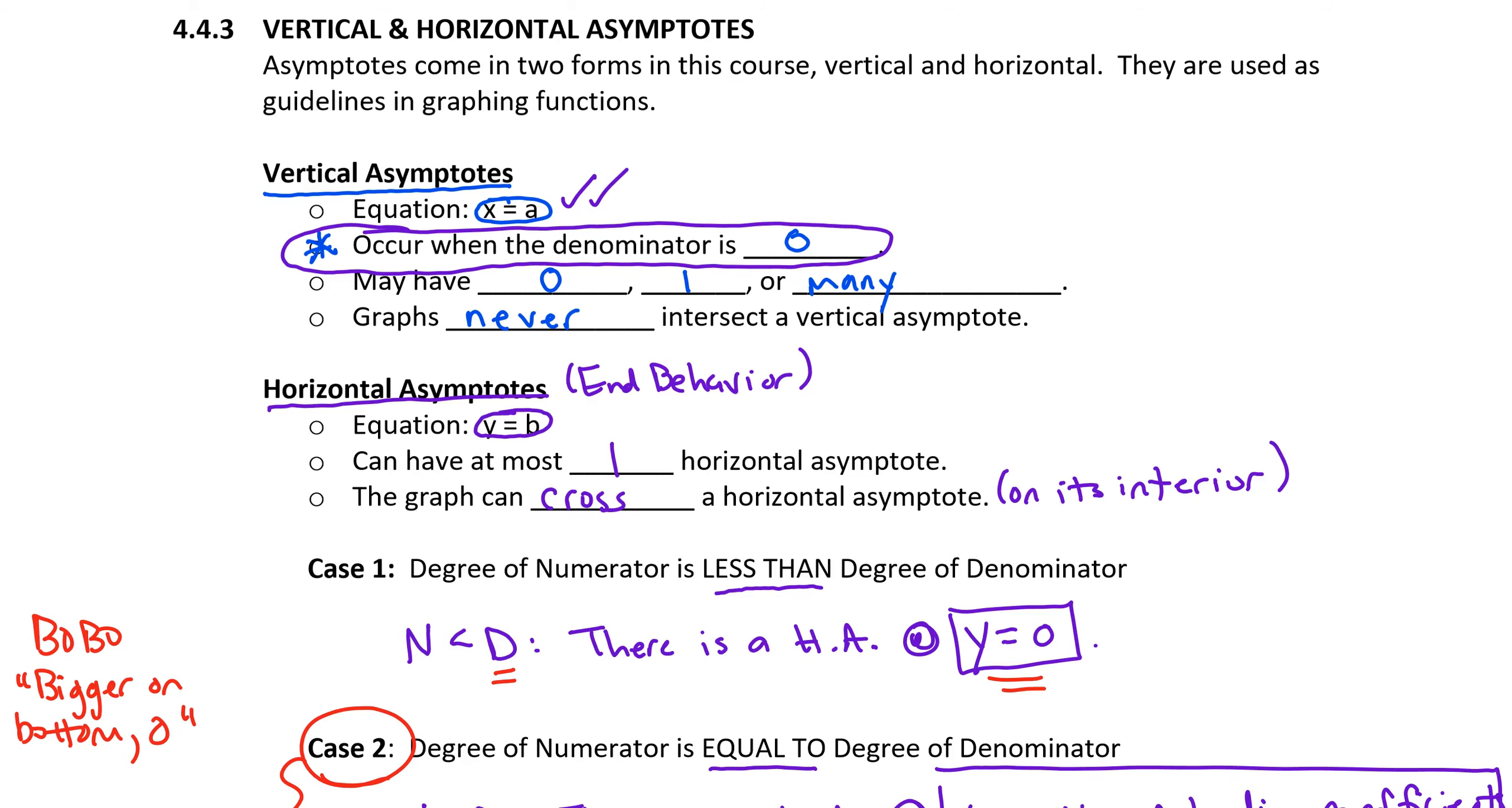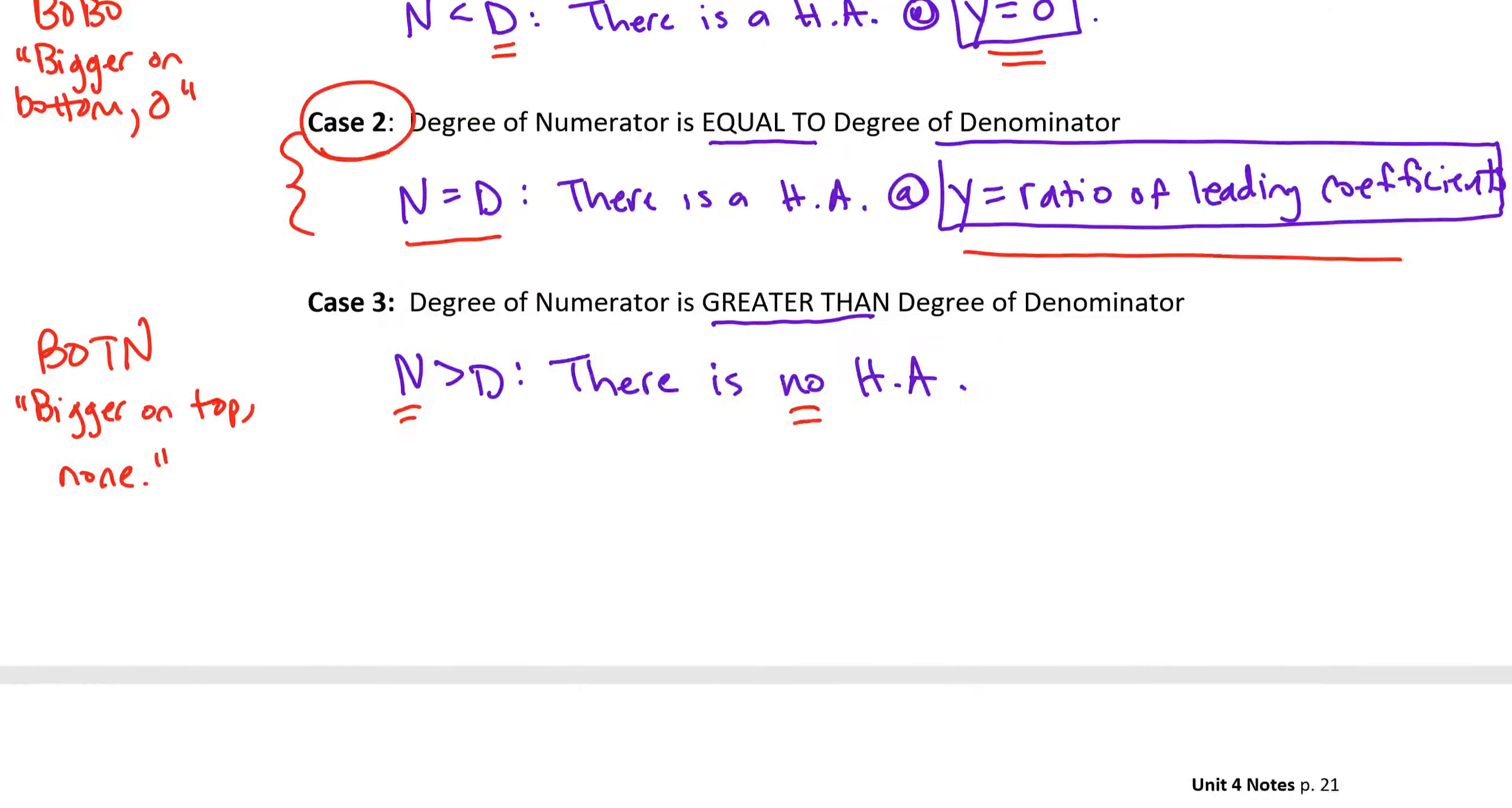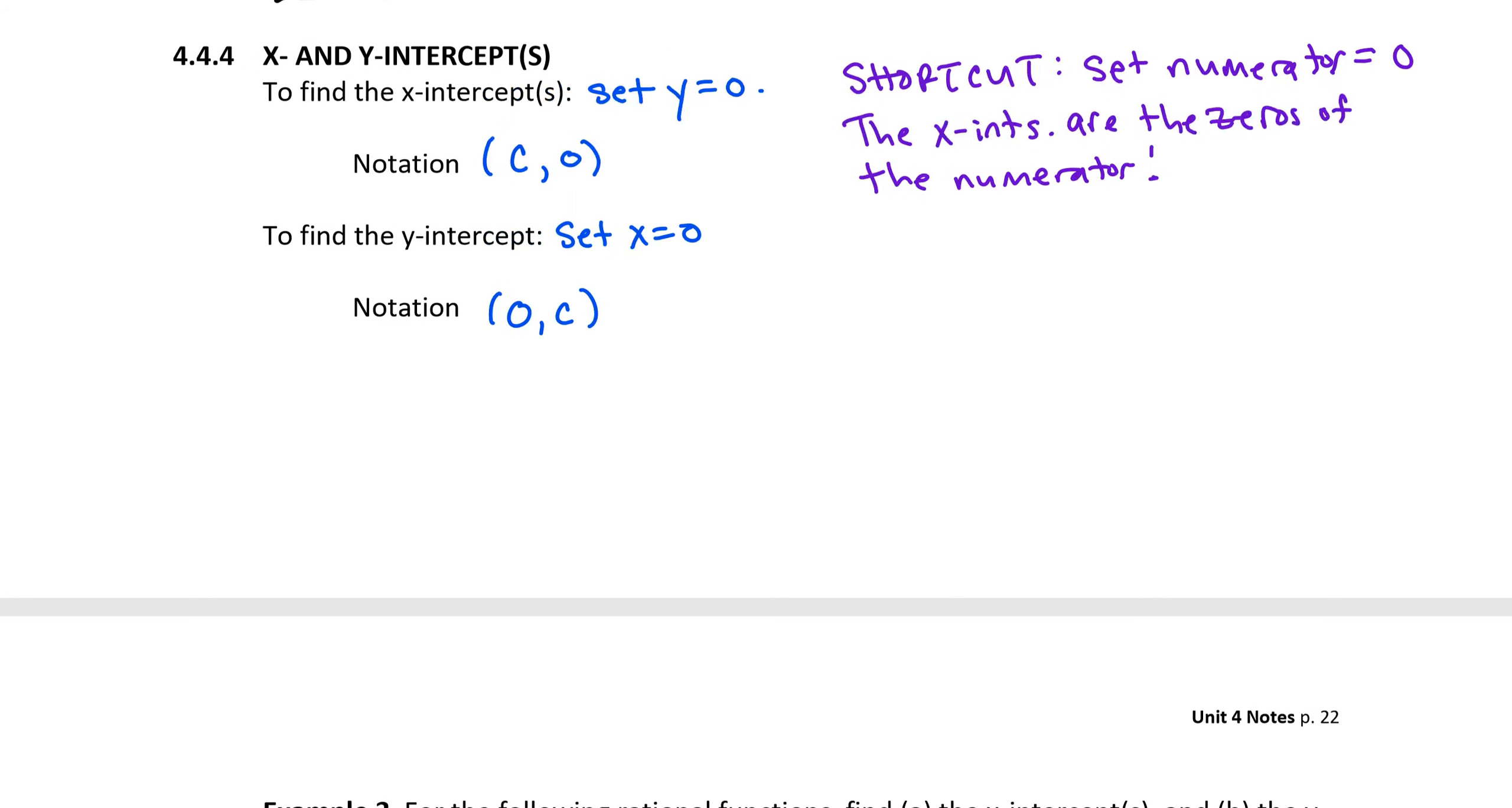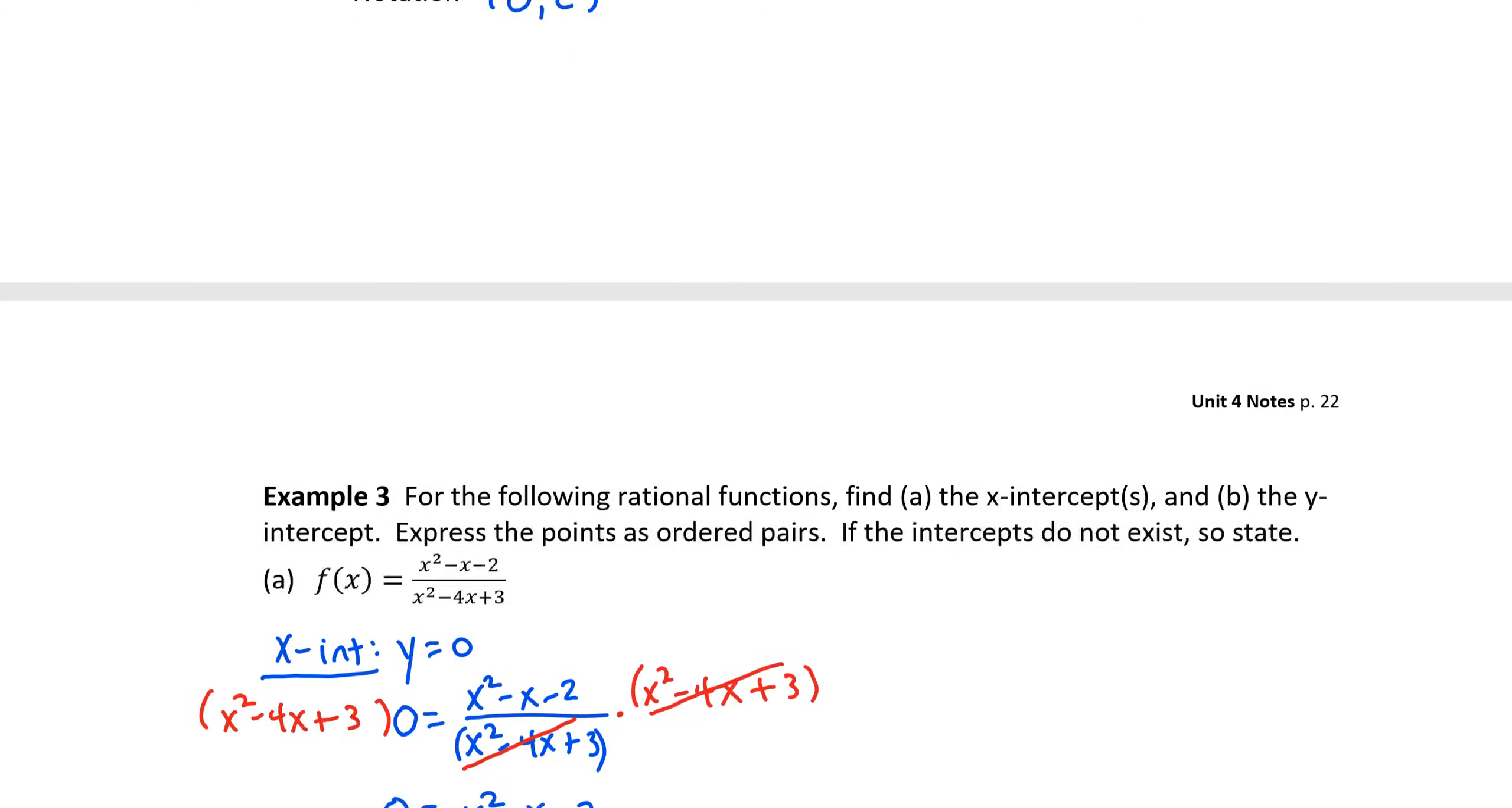So denominator equal to 0 gives me information about domain and vertical asymptotes. Numerator equal to 0 gives me the x intercepts, and I want to express the x intercepts as ordered pairs when I graph. So make sure you sort out all that information.